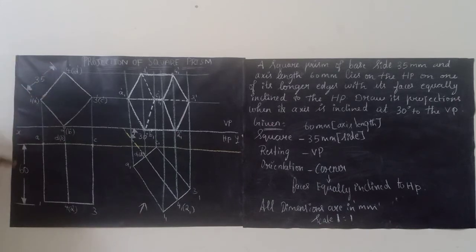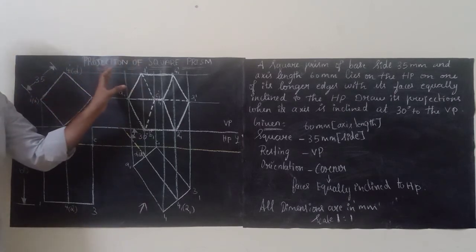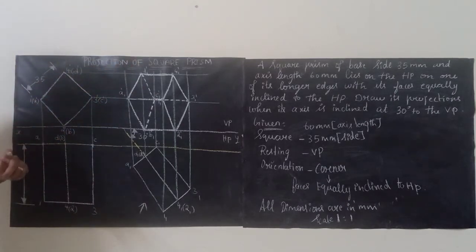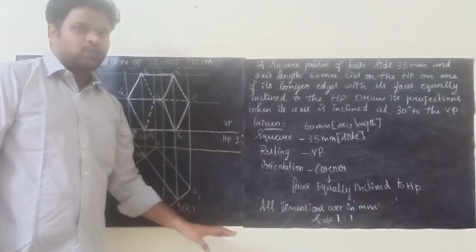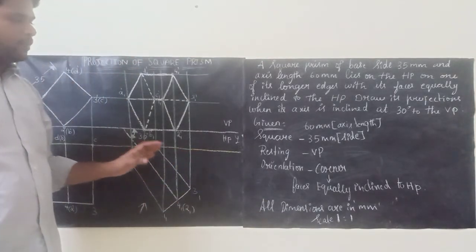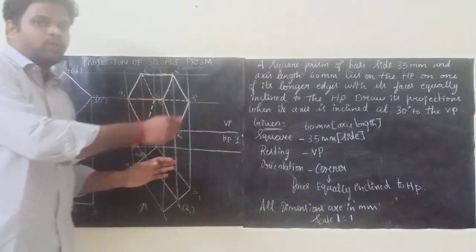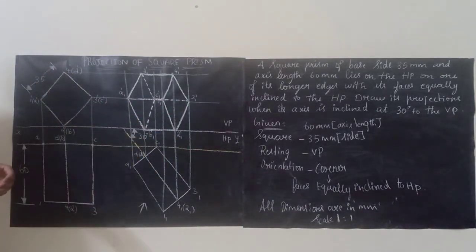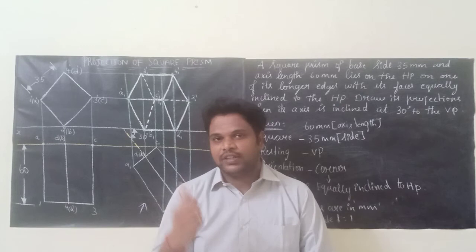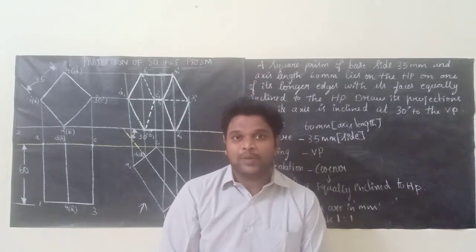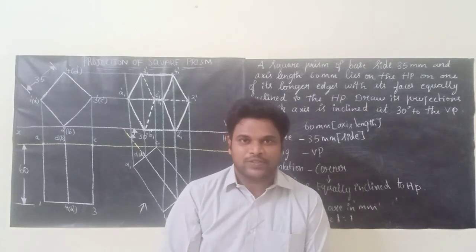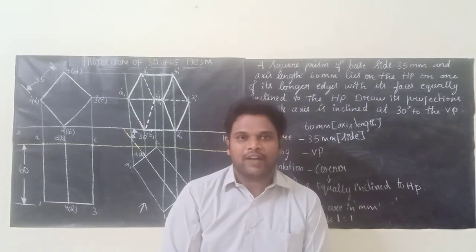Dimension here: the side of the square prism is 35mm and the axis length is 60mm. The heading should be 'Projection of Square Prism' with text height 10mm. Write all dimensions around, Scale 1:1, text height 5mm, written in the bottom right corner of your A3 sheet. If you feel this video is useful, share it with your friends and subscribe to Mechanical Motivator to receive all uploaded videos. Thanks for watching, have a great day!